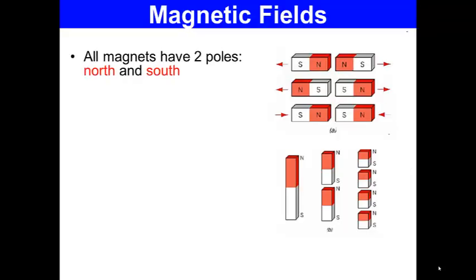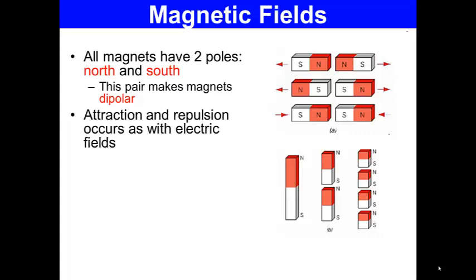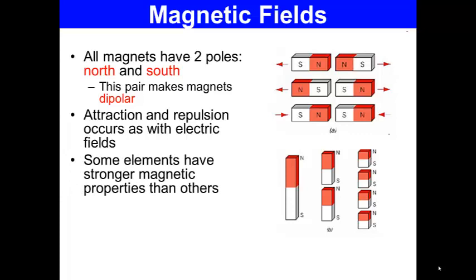All magnets have two poles — a north and a south. This pair makes the magnets dipolar. Attraction and repulsion occurs as with electric fields, meaning that like repels like and opposites attract.